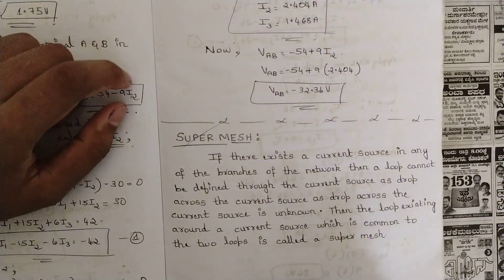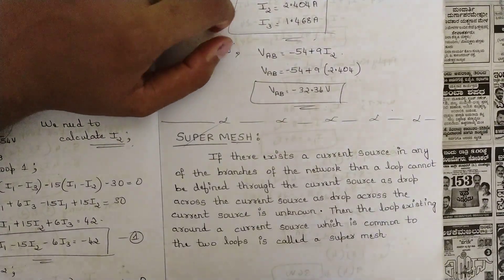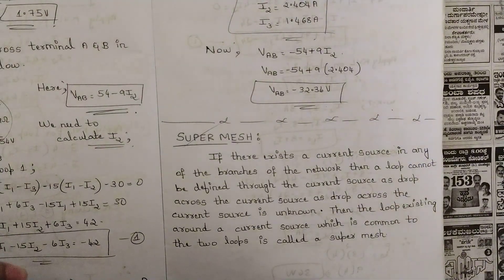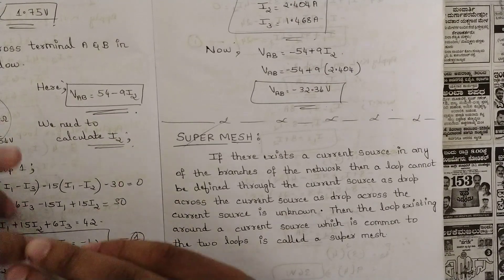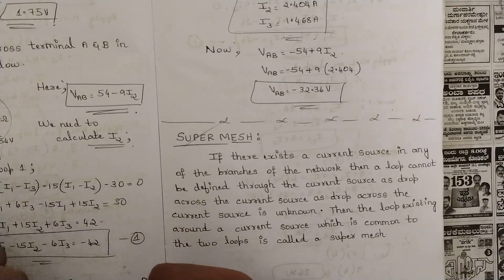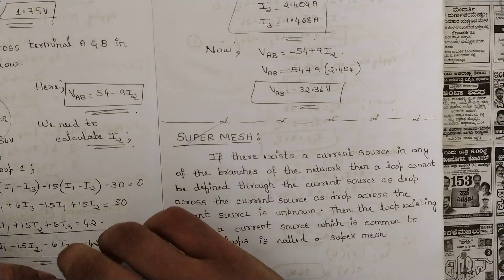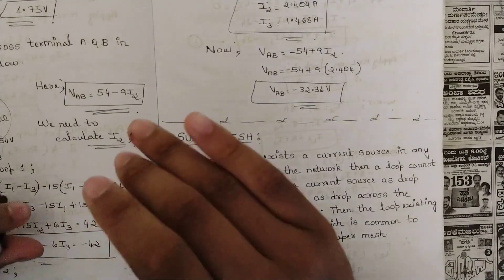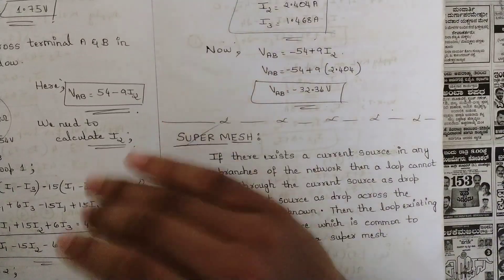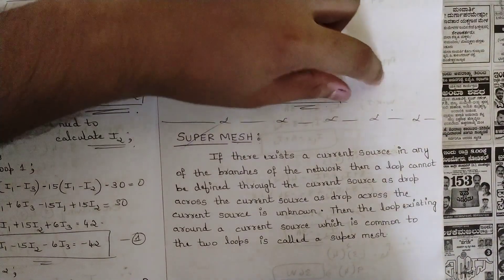Hello everyone, welcome to this new session. In our previous sessions we discussed many problems related to mesh analysis, and we concluded that for mesh analysis we should use Kirchhoff's Voltage Law (KVL) to find the loop currents, and using those loop currents satisfy conditions for current through and voltage across any resistor.